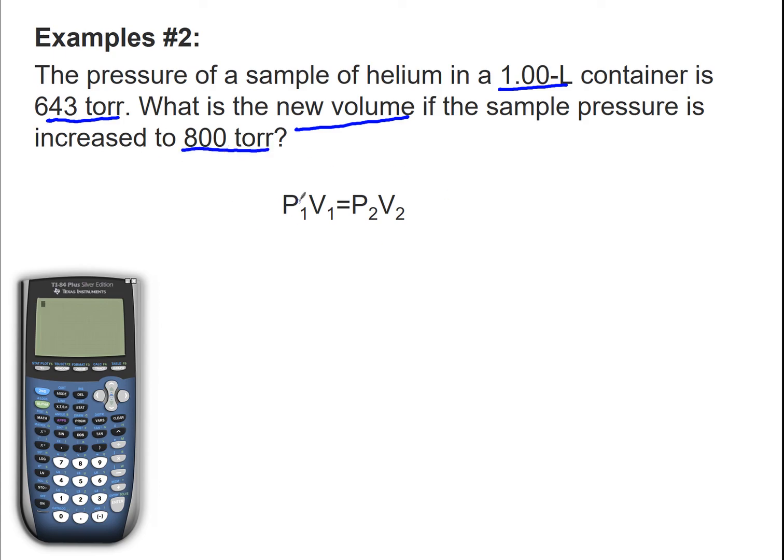Now I have my expression here. I'm going to make a list of variables. So I'll make my list: P1 equals 643 torr, V1, P2, and V2.